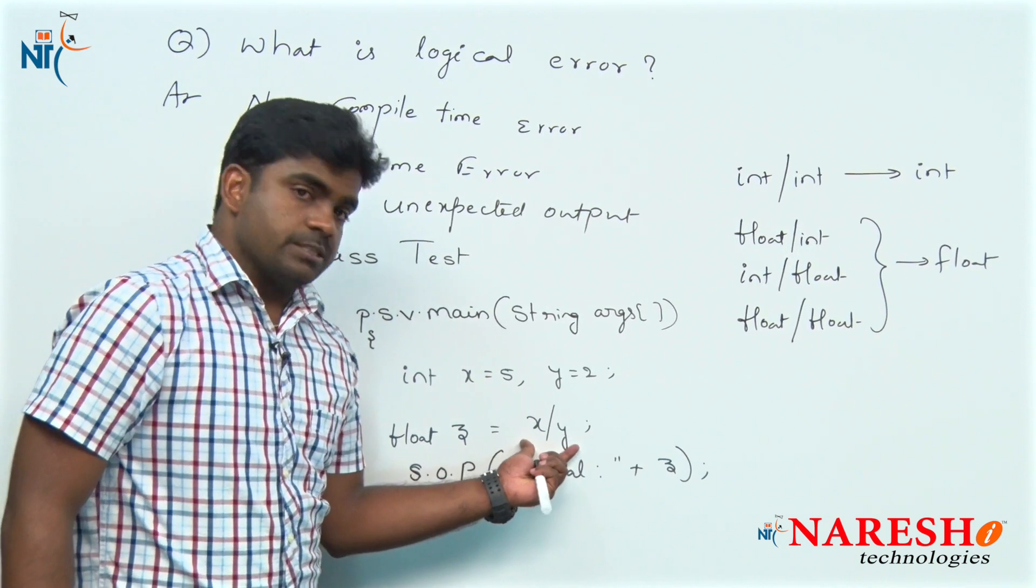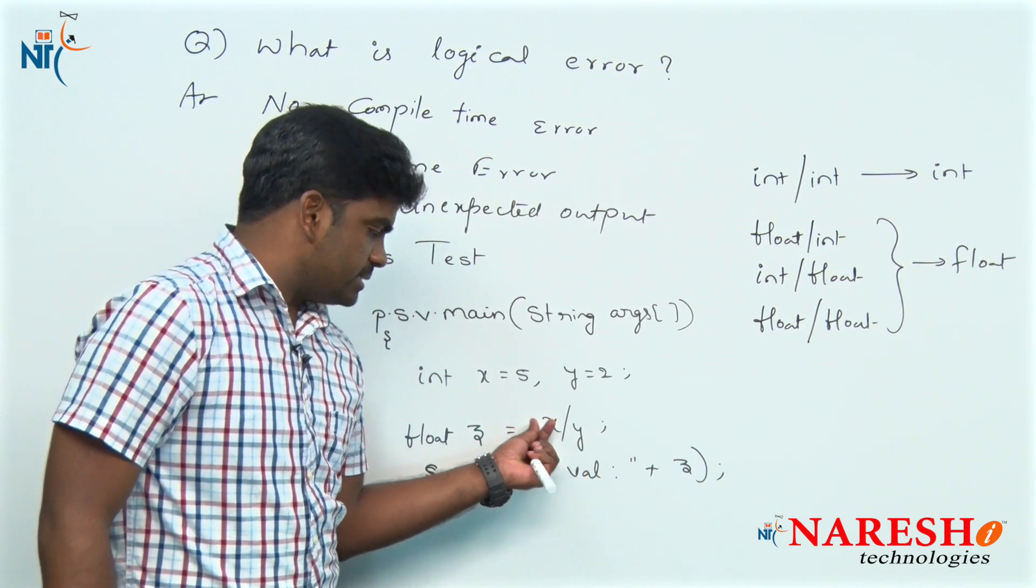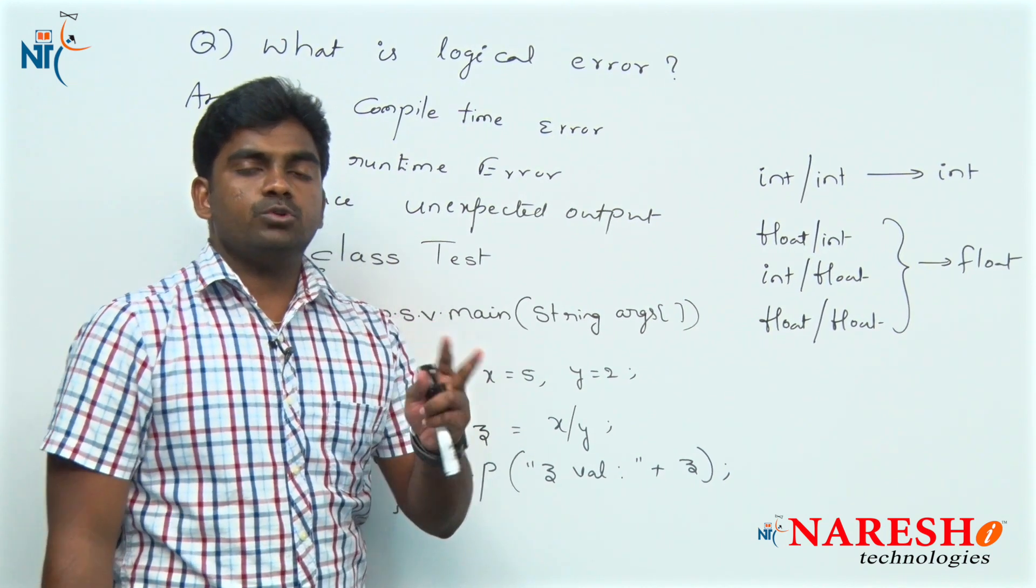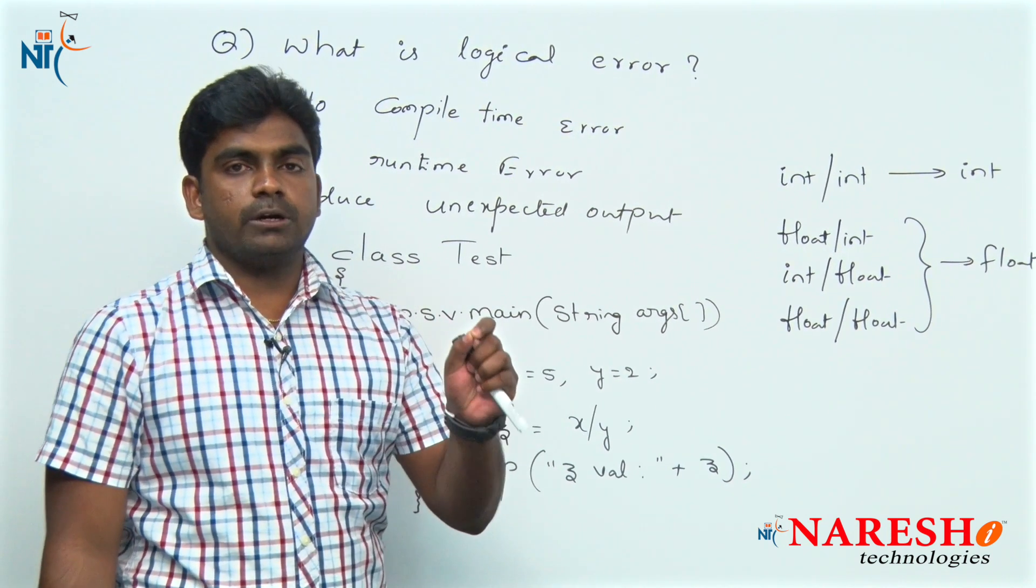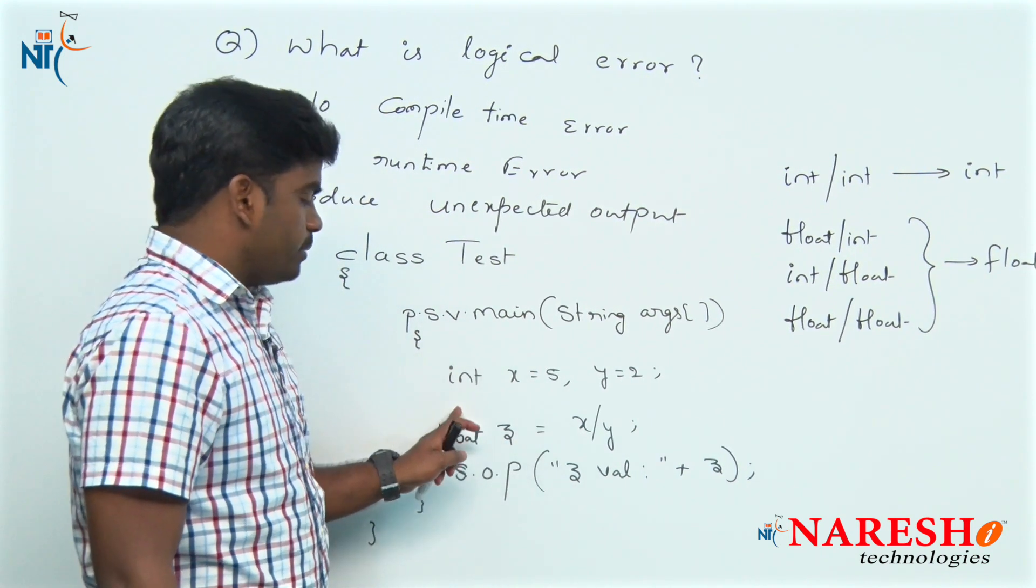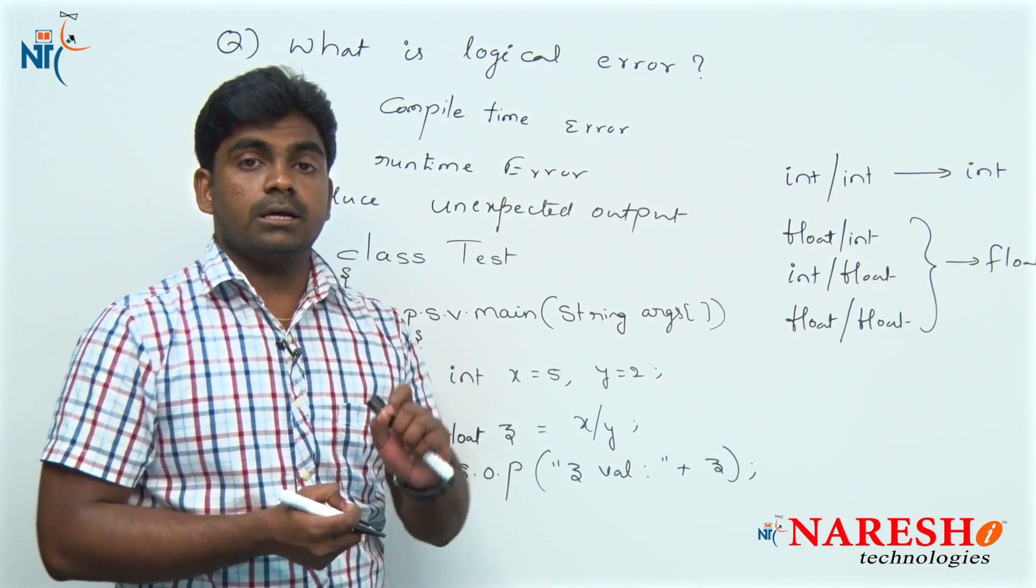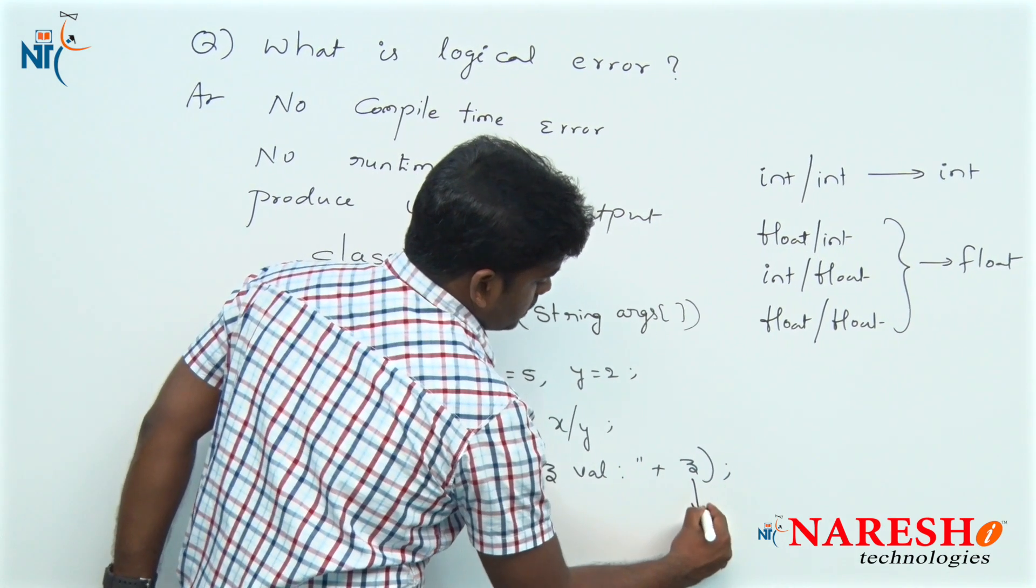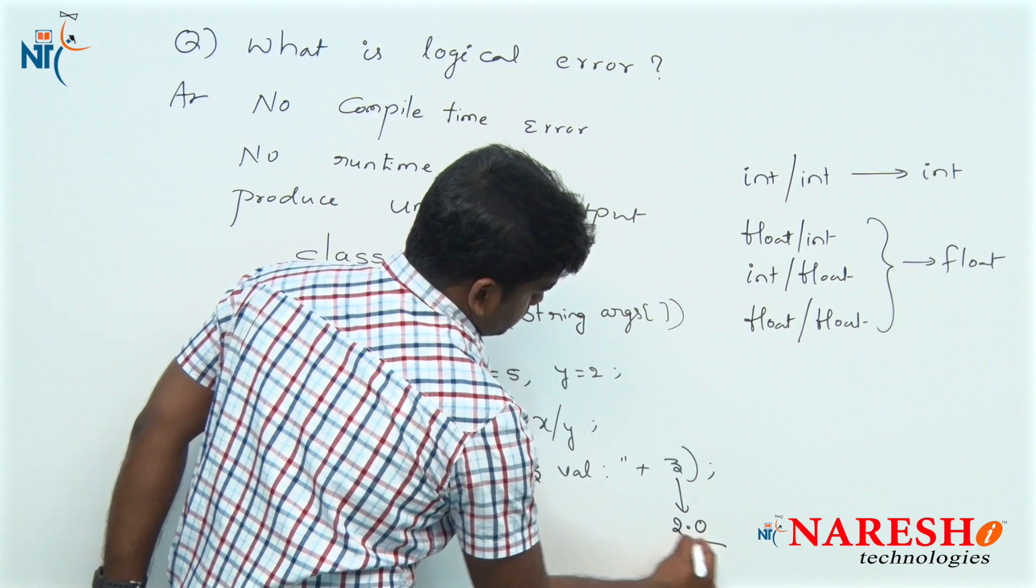But here, in this expression x by y, x is an integer and y is an integer. So instead of giving 2.5, it will give 2. We are collecting it into a float type variable, so it will store 2.0. It will print z value as 2.0.